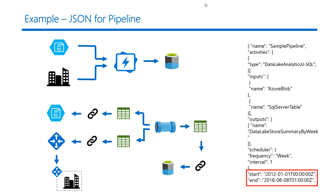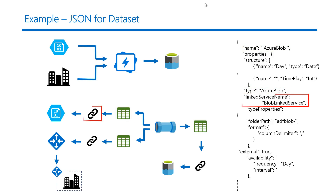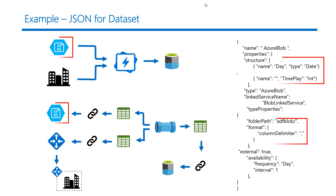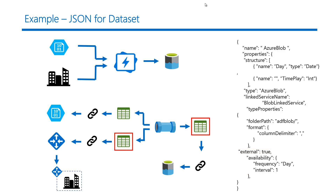Remember that the schedule frequency of the pipeline and the output dataset need to match. Once we have defined the pipeline, we define the input dataset with its type as Azure Blob, and the linked service it uses to connect to Azure Blob. Then comes the schema of the dataset, the folder path of its location, and the column delimiter since it is a file-based data store. You also need to specify the availability of this dataset, which is once a day, meaning that every day this data is available for consumption. Similarly, we define JSON datasets for the on-premise data store and Azure Data Lake Store.